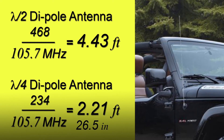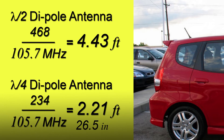One last example of a monopole antenna: if your favorite FM station is at 105.7 MHz, a resonant half-wave dipole would need to be 4.43 feet, and a quarter-wave would need to be 2.21 feet, or 26.5 inches. Now you know why, if your car antenna looks too short, you don't get very good FM reception.